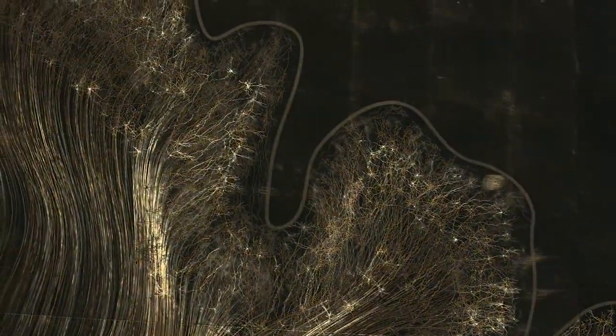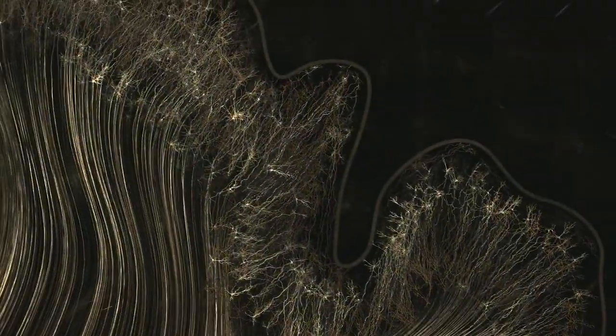Here we're coming into the somatosensory cortex, where the neurons are communicating to give you a sense of what it feels like to run your hand over your arm, or something like this.